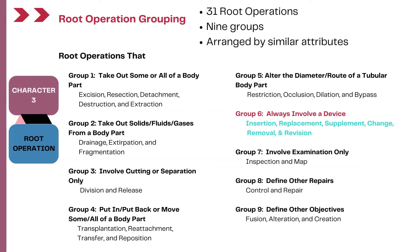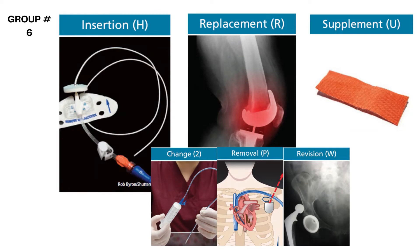There are 31 root operations in the Medical and Surgical section, and these root operations are divided into nine groups based on similar kinds of procedures placed in each group. Today we are looking at the sixth group, which talks about root operations that always involve a device. There are six root operations in the sixth group: Insertion, Replacement, Supplement, Change, Removal, and Revision. This group always involves a device being inserted, removed, changed, or revised.